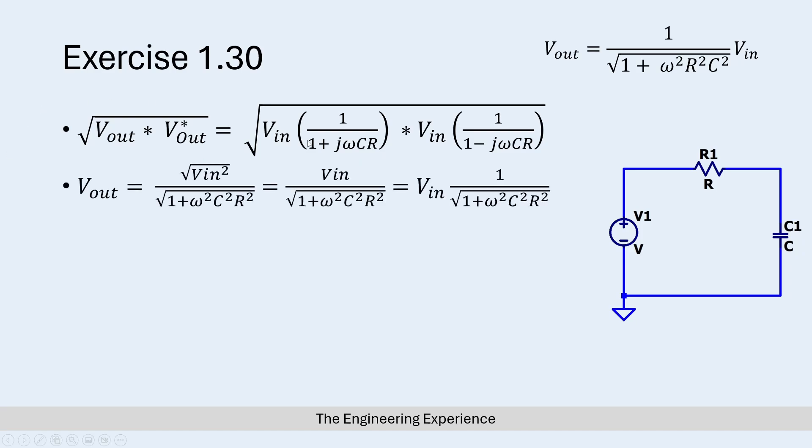Carrying out this multiplication, we get V_in squared on top, and then on the bottom we get 1 plus jωCR in brackets multiplied by 1 minus jωCR.